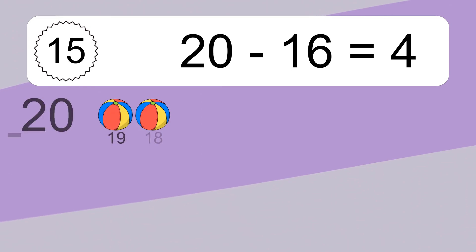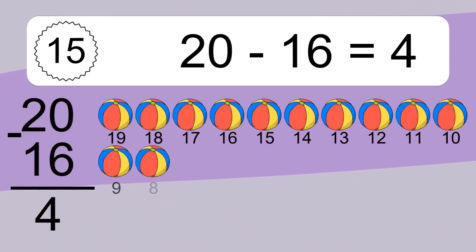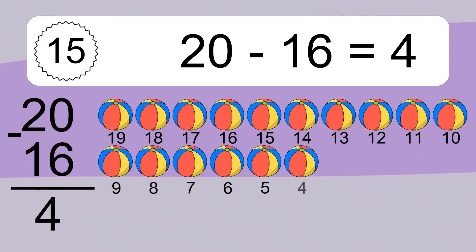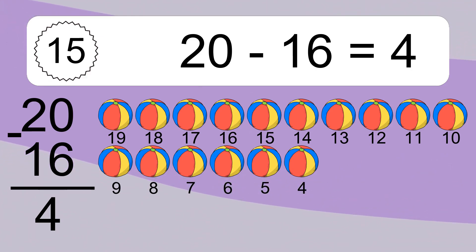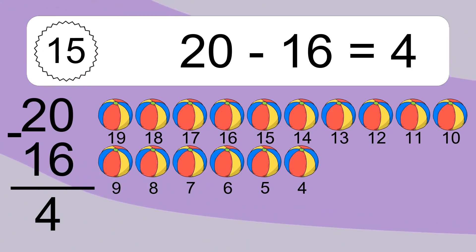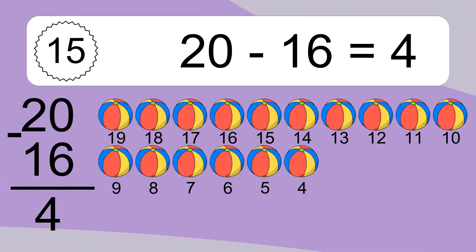20 minus 16 equals what? 20 minus 16 equals 4. Let's count it: 19, 18, 17, 16, 15, 14, 13, 12, 11, 10, 9, 8, 7, 6, 5, 4.